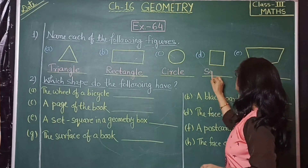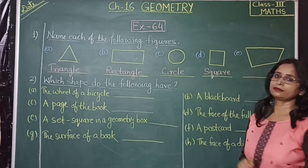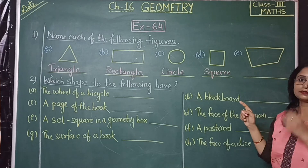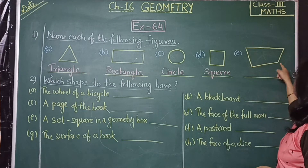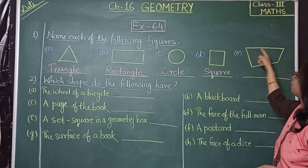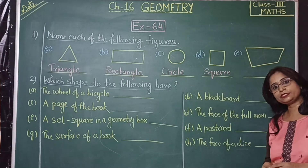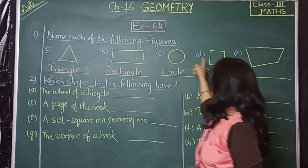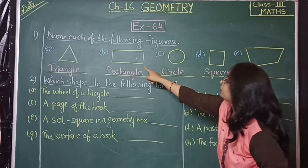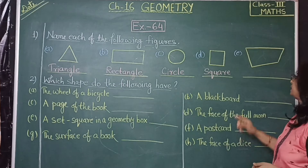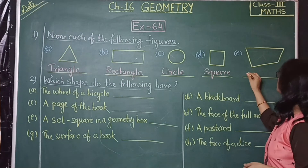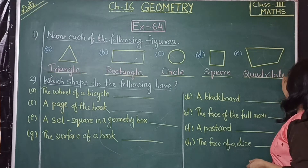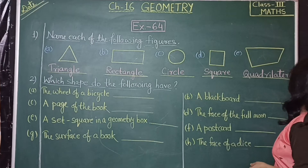The spelling of square is S-Q-U-A-R-E. And the last shape — which shape has four sides and four corners? That shape is a quadrilateral. A quadrilateral shape has four sides and four corners, but each quadrilateral shape has different properties. So this shape is the quadrilateral.